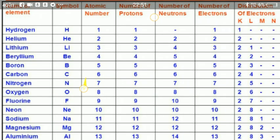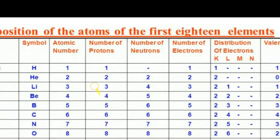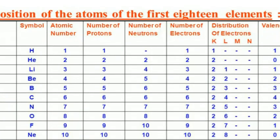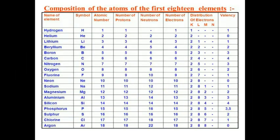Now we will look at the composition of the atoms of the first 18 elements. The table includes the symbol of the atom, atomic number, number of protons, number of neutrons, number of electrons, and distribution of electrons.